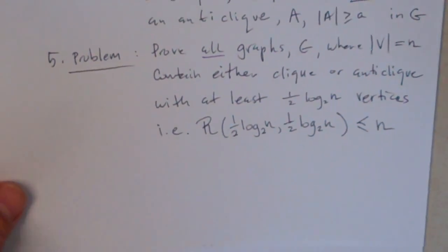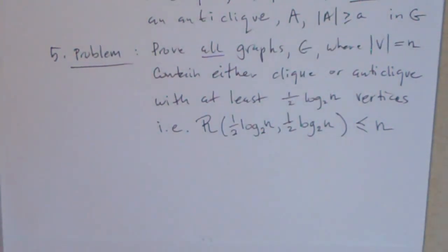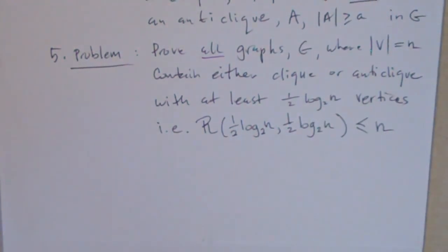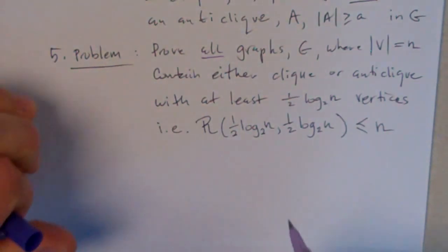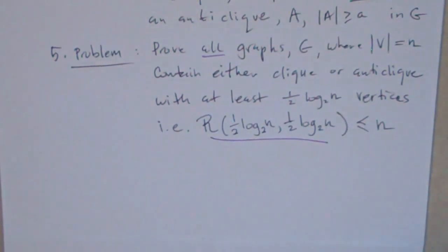I think if we understand all that, now the problem is we have to prove that all graphs G, where the number of vertices is n, contain either a clique or an anti-clique with at least 1/2 log_2 n vertices. And that means basically that the Ramsey number of 1/2 log_2 n, 1/2 log_2 n is less than or equal to n, the size of the number of nodes in the graph.